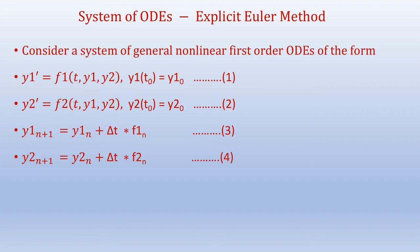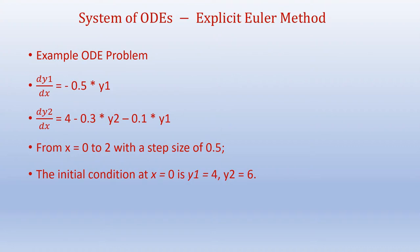The same methodology can be used for a system of many first-order ODEs. We will now try to solve an example problem. The system of ODEs is given as: dy1/dx = -0.5 × y1, and dy2/dx = 4 - 0.3 × y2 - 0.1 × y1.